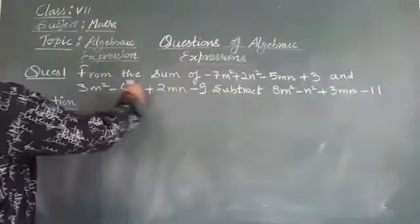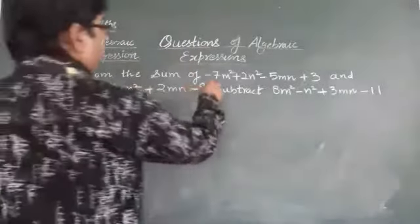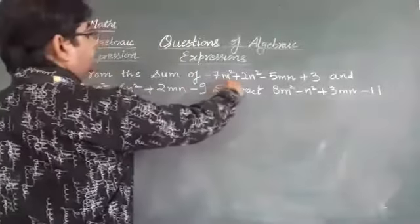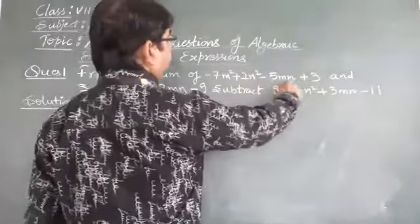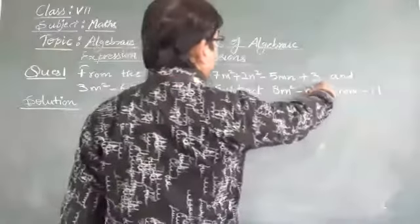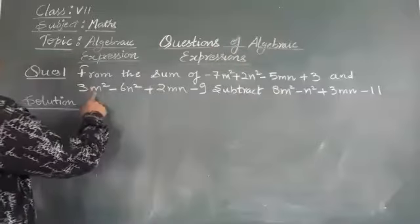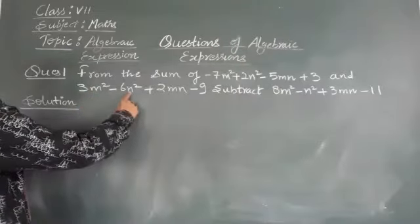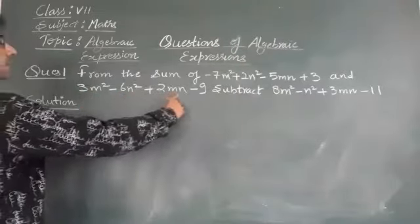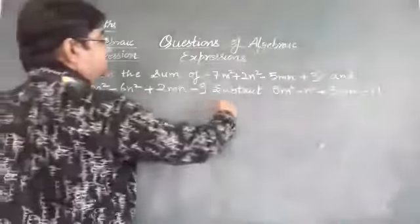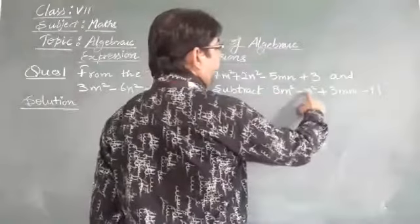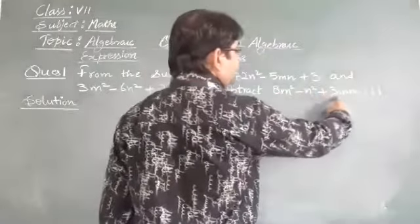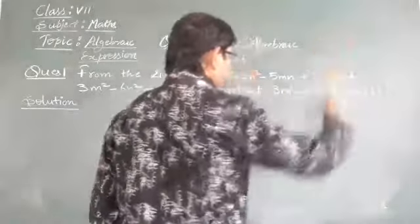From the sum of minus 7n square plus 2n square minus 5n plus 3 and 3n square minus 6n square plus 2n minus 9, subtract 8n square minus 9n square plus 3n minus 9.